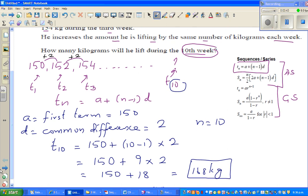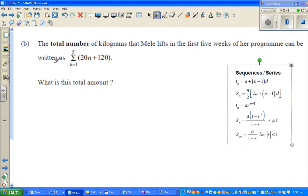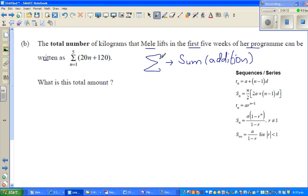What does this mean? In the 10th week he lifted 168 kg. Let us look at one more question. The total number of kilograms that Mele lifts in the first five weeks of her program can be written by this formula. Now this letter, this is called sigma. This is a Greek letter and whenever you have this, this is always for summation or sum or addition.